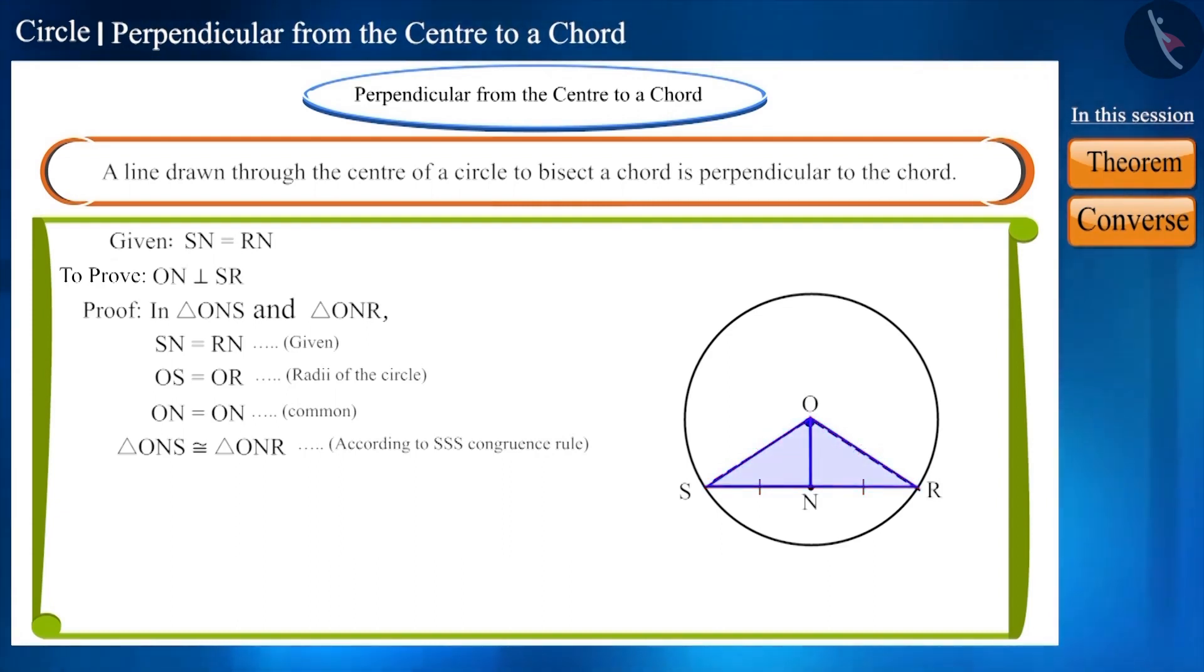And we know that the corresponding parts of congruent triangles are equal. We have to prove that angle ONR and angle ONS are right angles. Look at the figure carefully.